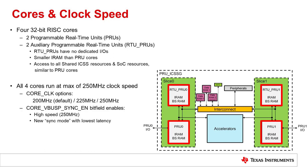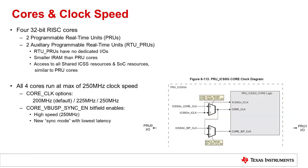All four PRU ICSSG cores can run at a maximum clock speed of 215 MHz. The default speed, however, is 200 MHz, similar to the original PRU ICSS. The PRU ICSSG's Core VBUS Sync N bitfield enables a high-speed 250 MHz mode as well as a new sync mode. This sync mode allows the PRU and RTU core clocks to be in lockstep with the SOC interconnect, and should be used by applications requiring the lowest latency when accessing SOC resources outside of the PRU ICSSG.